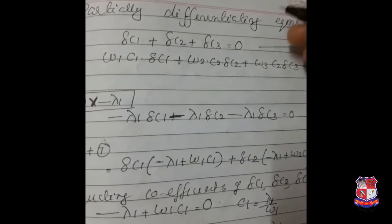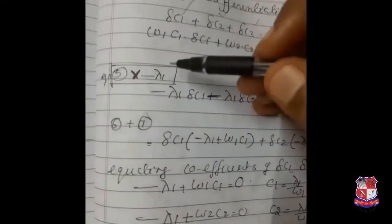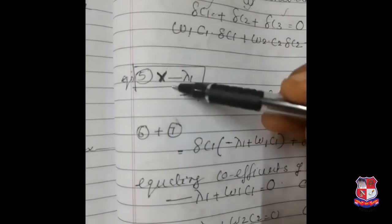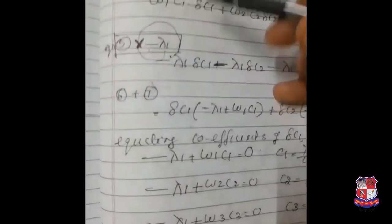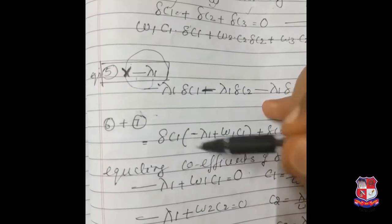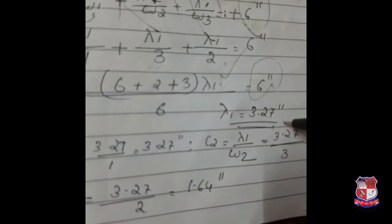Partial differentiation of equations 3 and 4 with respect to C1 and C2 set equal to zero. Multiplying the constraint equation by −λ₁ (lambda 1) and adding equations 6 and 7: δC1 is common. We equate coefficients to zero and find C1, C2, and C3 in terms of λ₁. Setting the total equal to 6 seconds, we find λ₁ = 3.27 seconds, then apply the equation to find C1, C2, and C3.